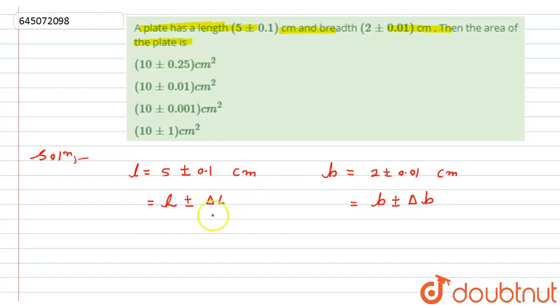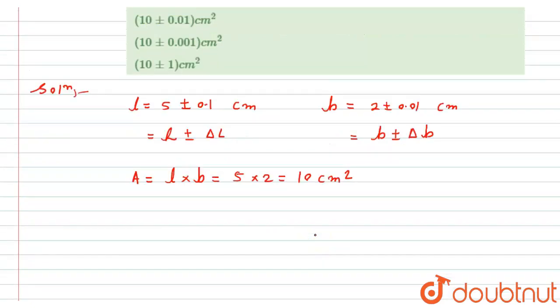According to this, the value of l and b will be 5 and 2. So the required area, that is A, will be equals to l into b, that will be 5 into 2, that is equals to 10 centimeter square. But we have to consider the error also. So for that: